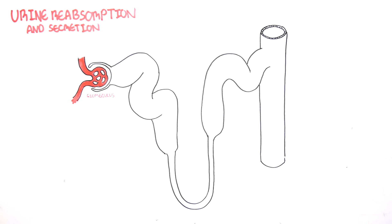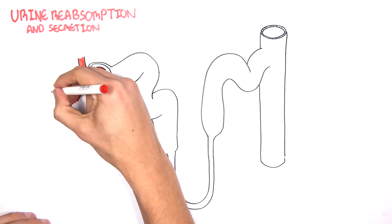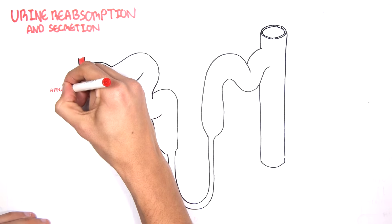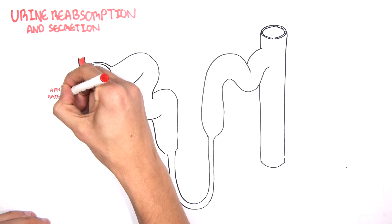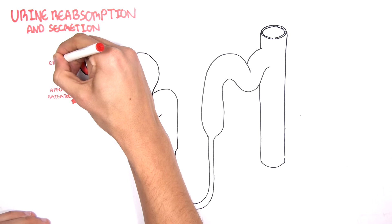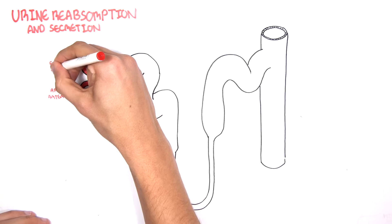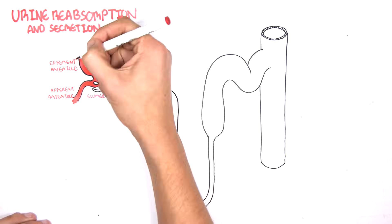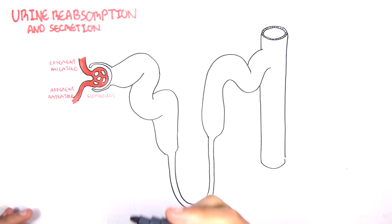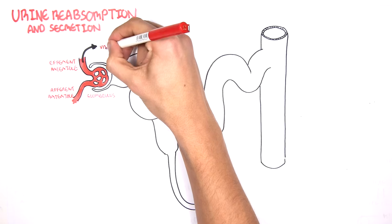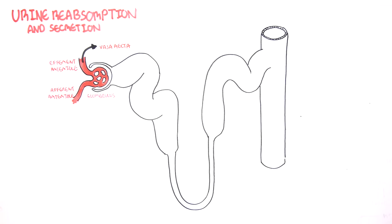Let's recap some anatomy first. The afferent arteriole brings in blood and plasma to the head of the nephron, where the vessels form what's called the glomerulus. The vessels then exit via the efferent arteriole, which forms the vasorecta — capillaries that follow the tube of the nephron. The vasorecta allow for reabsorption of things back into circulation while also allowing secretion from circulation back inside the nephron tubule.